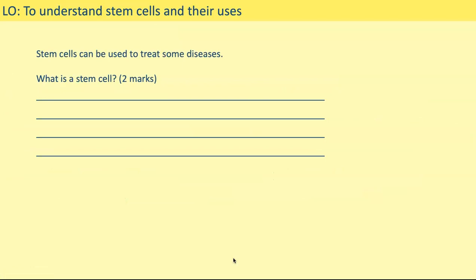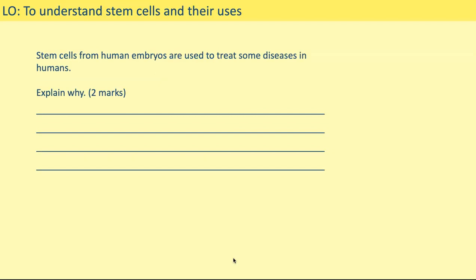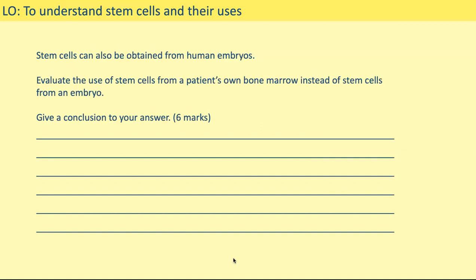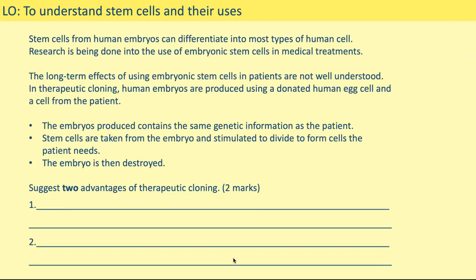Now I'm going to put some exam questions about stem cells on the screen. You need to pause at each question and complete it, then move on to the next one. After all the questions, I'll go through the answers. Here are questions one through five — the final question is only slightly different to the previous one. Once you've finished, make sure you've got your green or different coloured pen ready and we'll go through the answers.